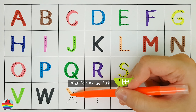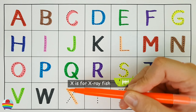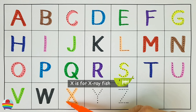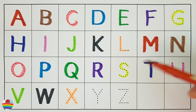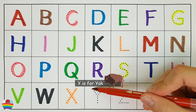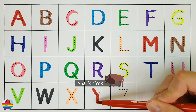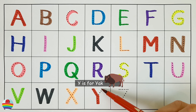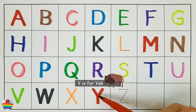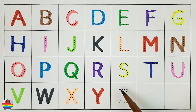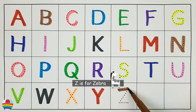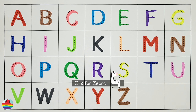X. X is for x-ray fish. X. Y. Y is for yak. Y. Z is for zebra. Z.